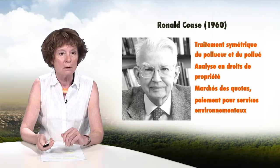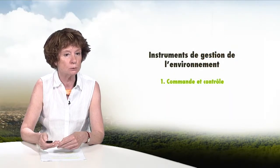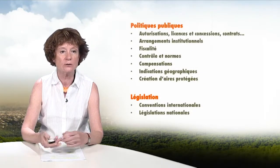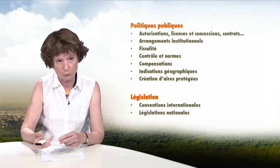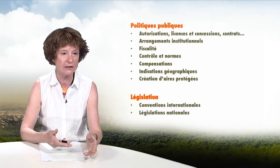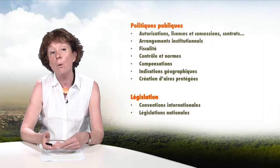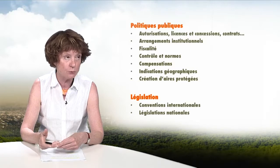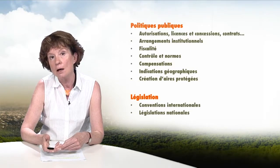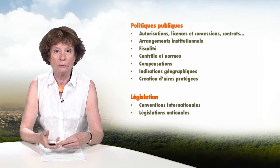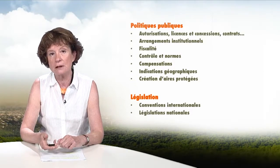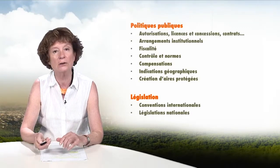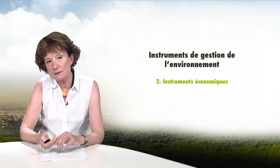The major instruments of environmental management include a block called command and control: the regal powers of the state — authorizations, licenses, public policies, institutional arrangements, taxation, the carrot and the stick, controls and standards, compensations, geographical indications, and the creation of protected areas. There is also a whole set of legal instruments, such as international conventions which are transcribed into national legislation once adopted.